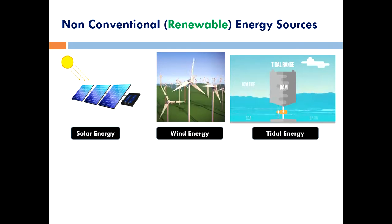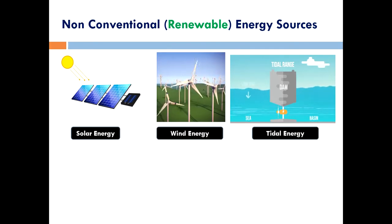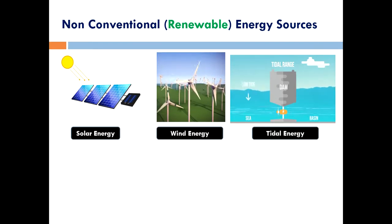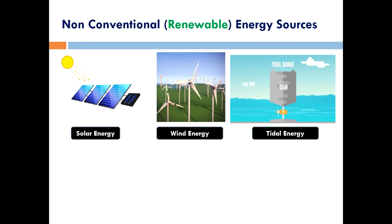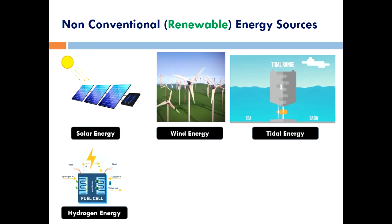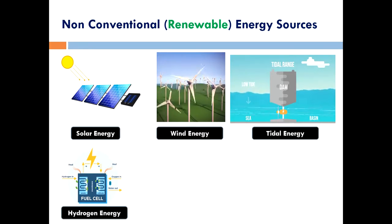Tides are the periodic rise and fall of the water level of the ocean, produced by the gravitational forces of the moon. Tides contain large amounts of energy that help produce tidal energy. The rise and fall of water generates power which moves the blades of a turbine to generate electricity. The most appropriate locations for production of tidal energy in India are the Arabian Sea and Bay of Bengal.